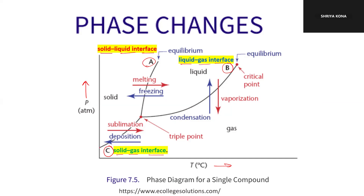When you go up from the solid-gas interface, you reach a point known as the triple point. The triple point has the property that solid, liquid, and gas all exist at this point. So if you are below the triple point, you are at just the solid and gas interface, which means you can directly go from solid into gas, as you can see.